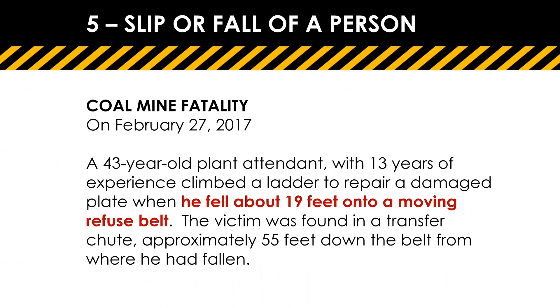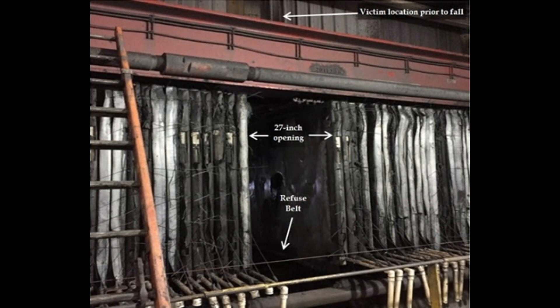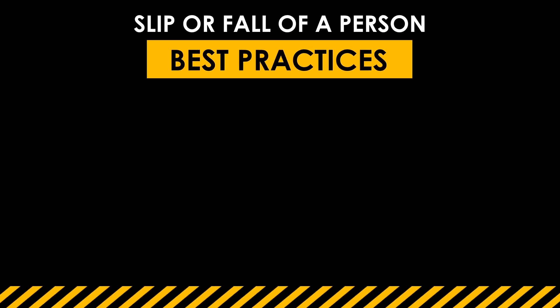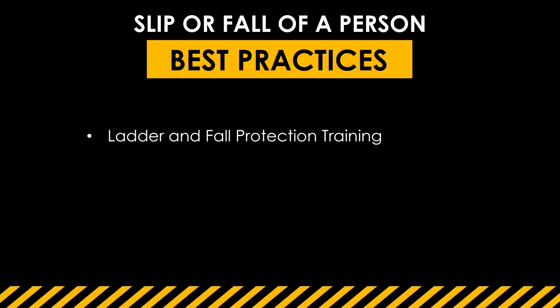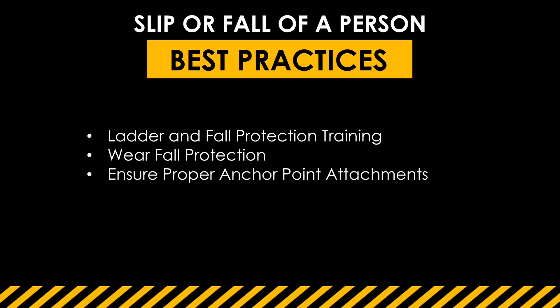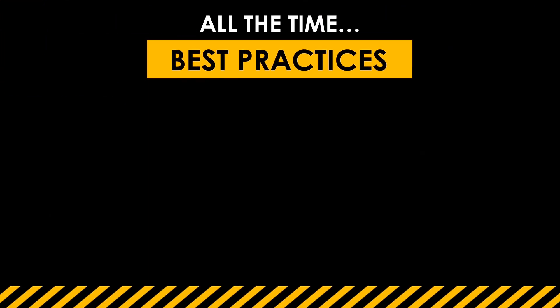Another example: at a coal mine, a 43-year-old plant attendant with 13 years of experience climbed a ladder to repair a damaged plate. He fell about 19 feet onto a moving refuse belt and was found about 55 feet down the belt. Best practices to avoid slip or fall fatalities include ladder and fall protection training, wearing and actually using fall protection — there are fatality reports where miners were wearing fall protection but weren't tied in — so ensure proper anchor point attachments, and lockout and tag out equipment you're working on.